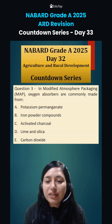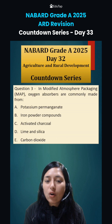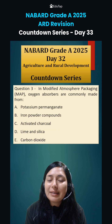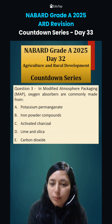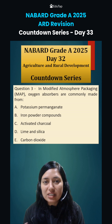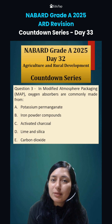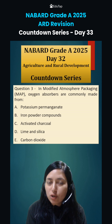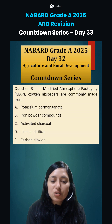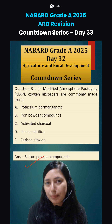Next question was: in modified atmospheric packaging, oxygen absorbers are commonly made from. In a modified atmospheric packaging system, the answer here will be iron powder compounds.